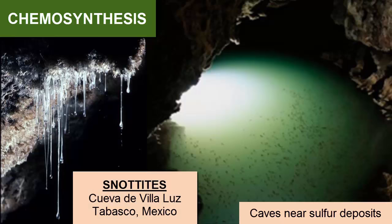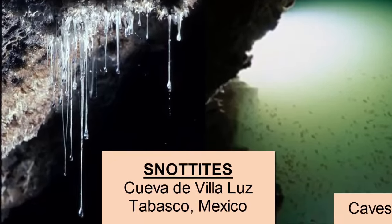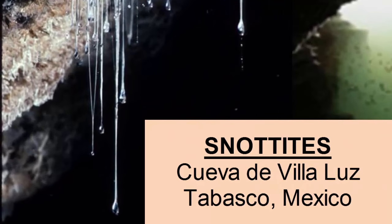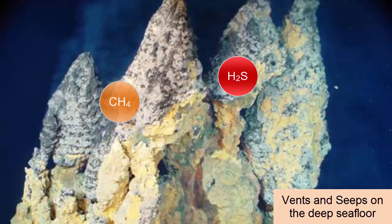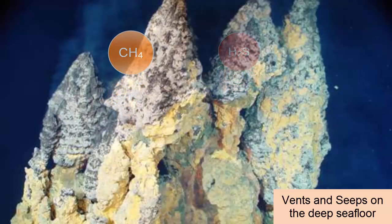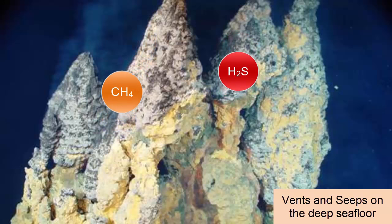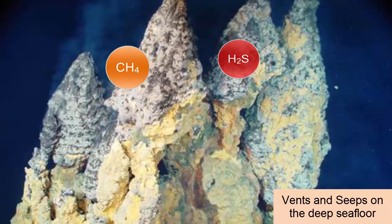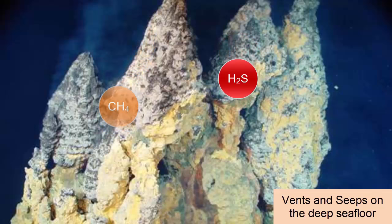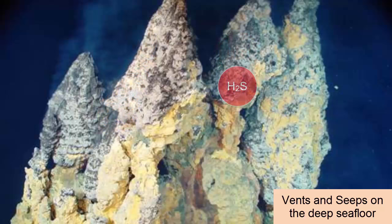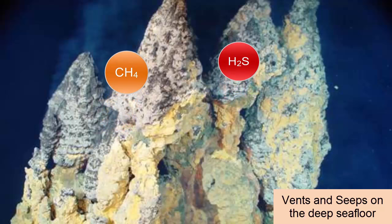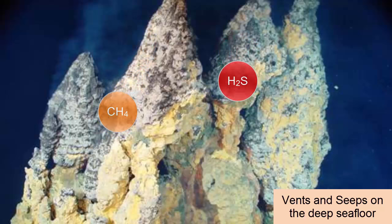These mats are called snotites. This example is from Cueva de Villaluz in Tabasco, Mexico. These snotites have acid drops at their tips with a pH of zero. In hydrothermal vents and hydrocarbon seeps on the bottom of the seafloor, bacteria capture energy from hydrogen sulfide or methane gases and use that energy to synthesize sugar. These bacteria provide the base of an exotic and diverse food web.